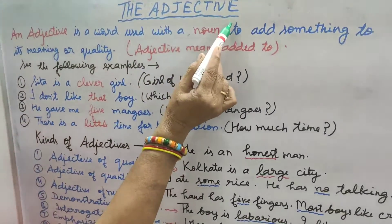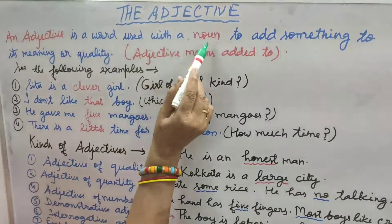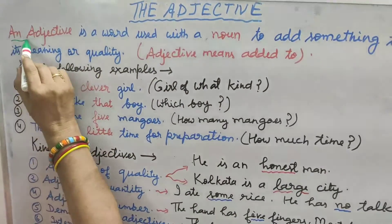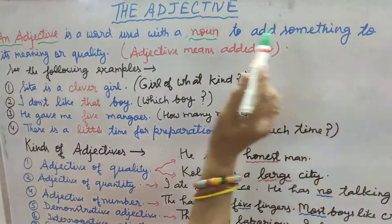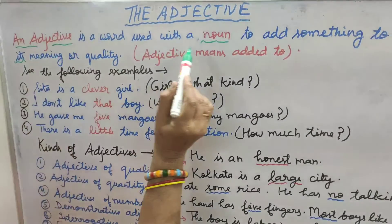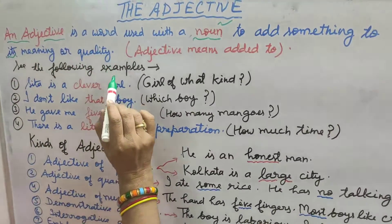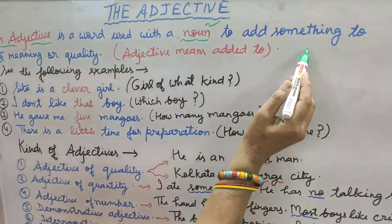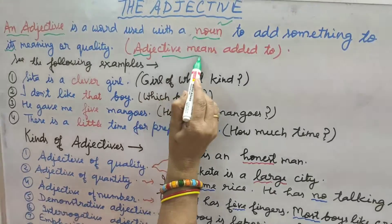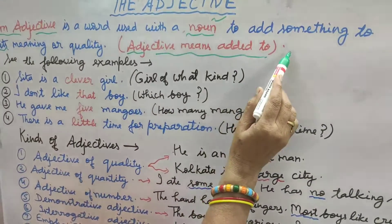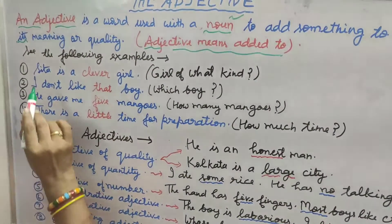The adjective is a word used with a noun to add something to its meaning — to add something to its meaning or quality. Noun mein kuch alag se meaning jodne ke liye ya uski quality jodne ke liye hum adjective ko use karte hain. It means adjective adds to the quality of the noun.